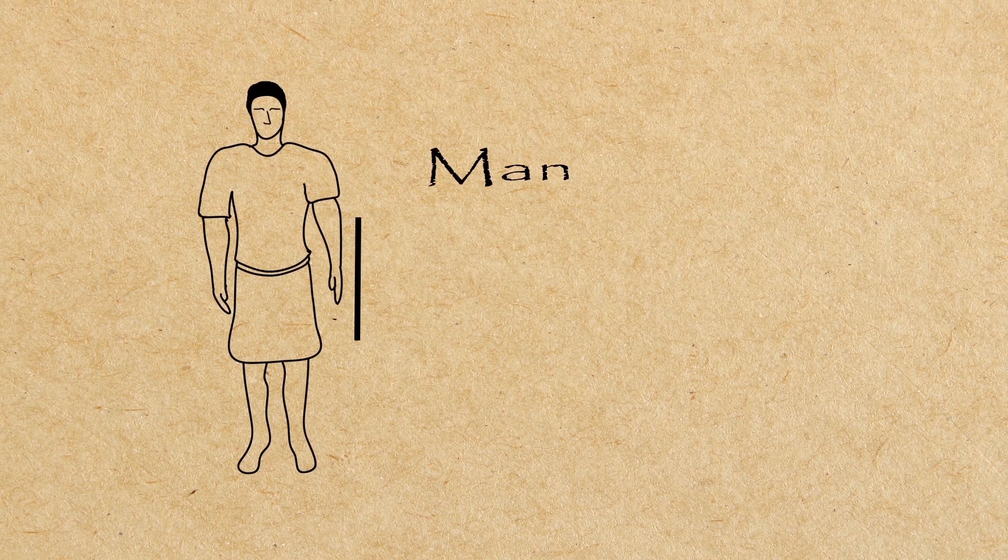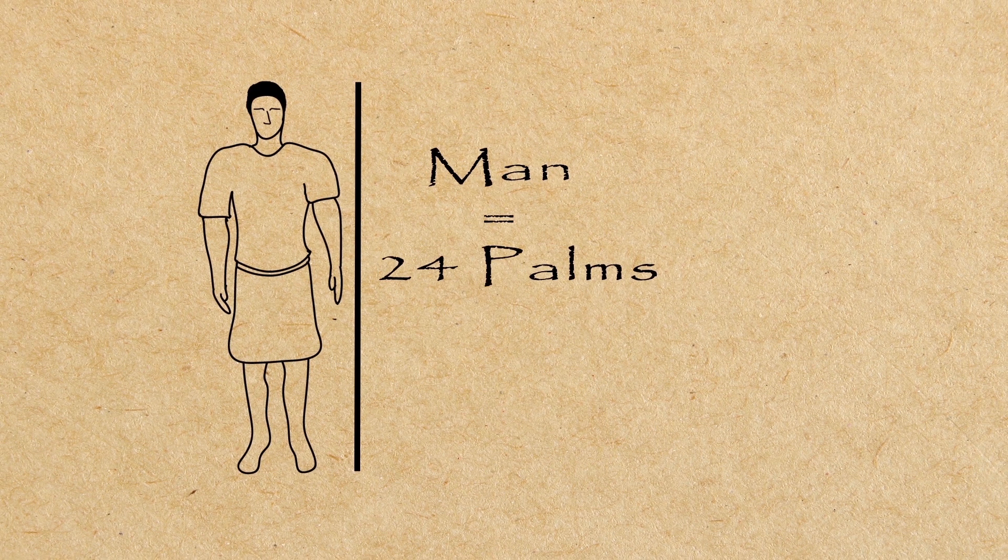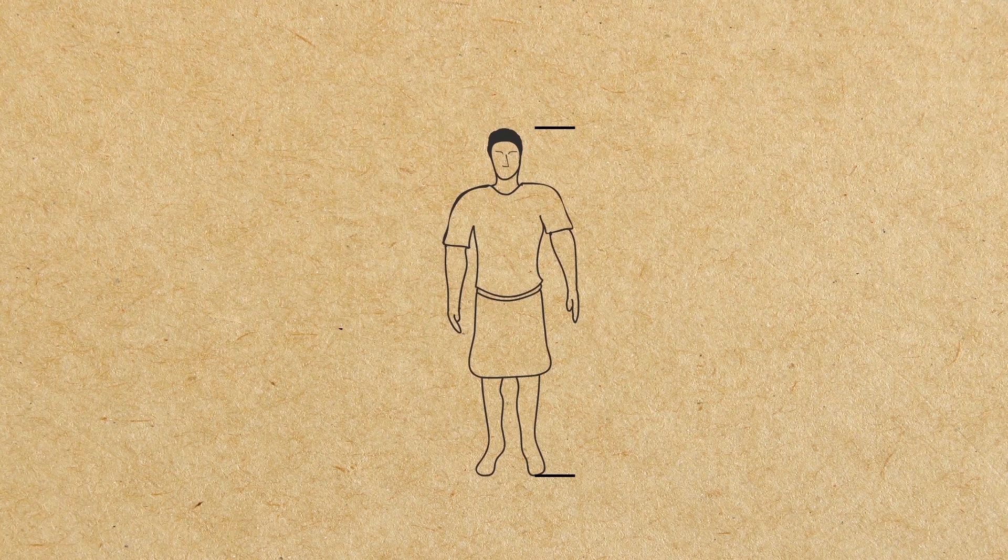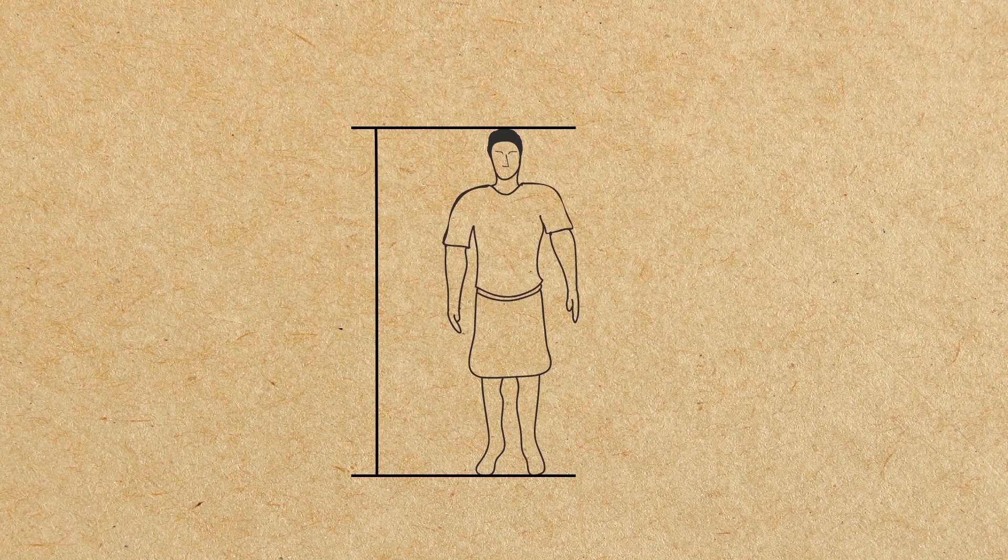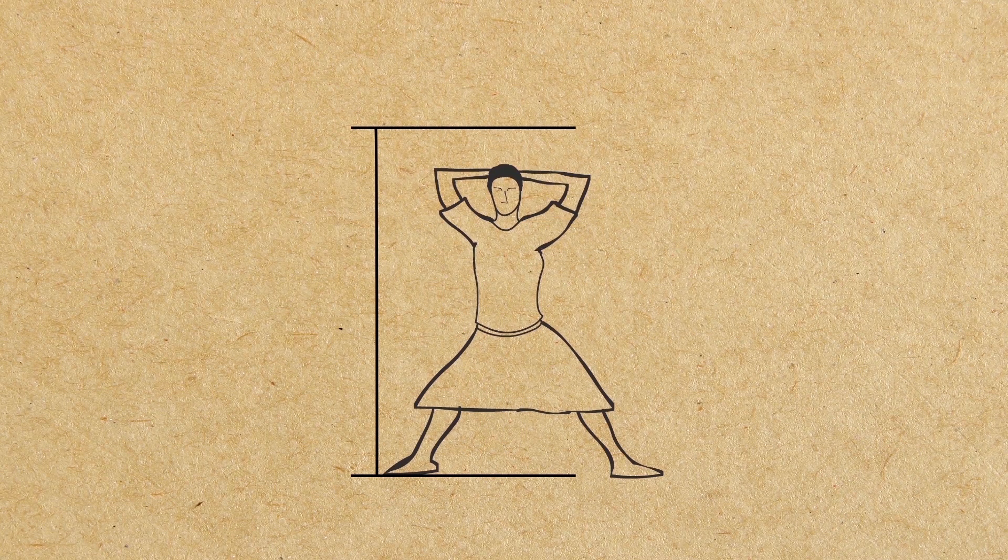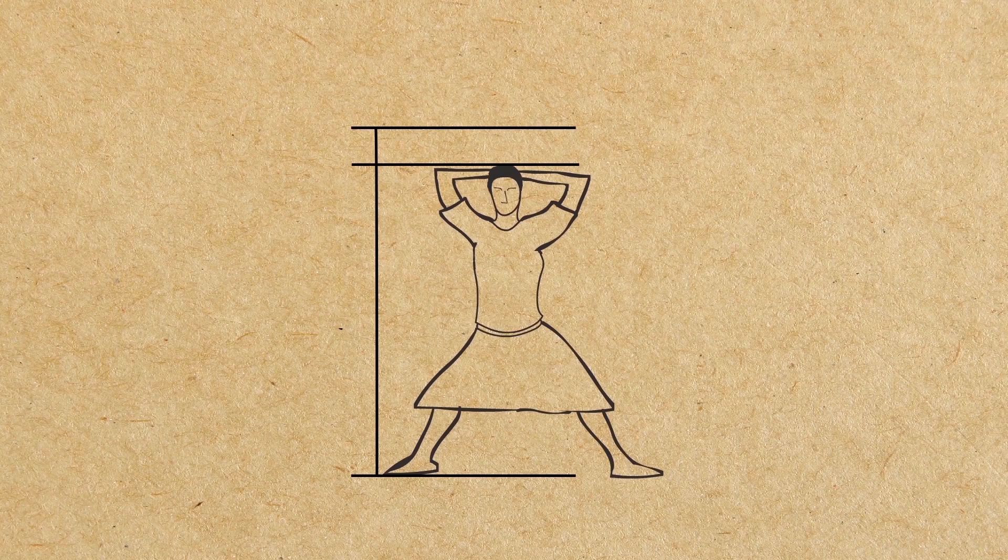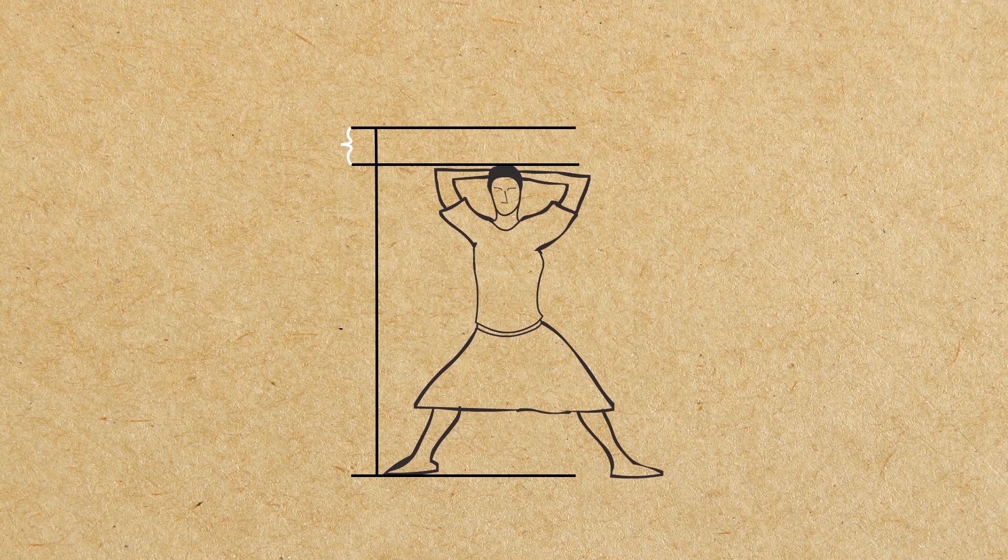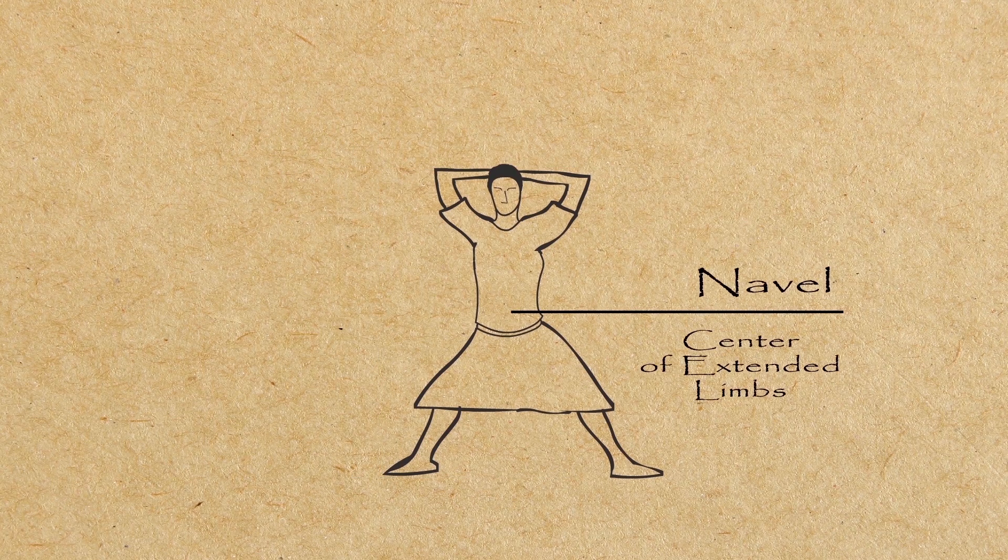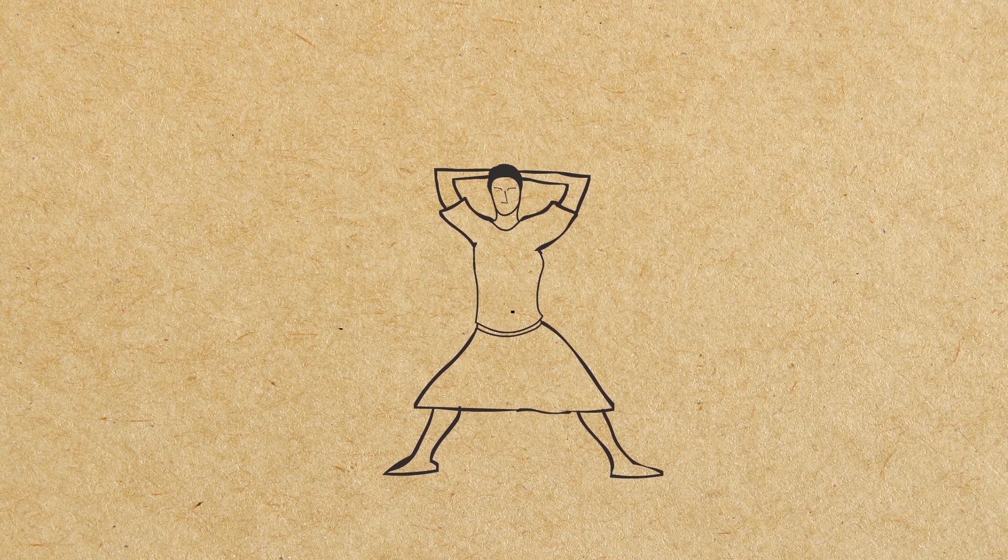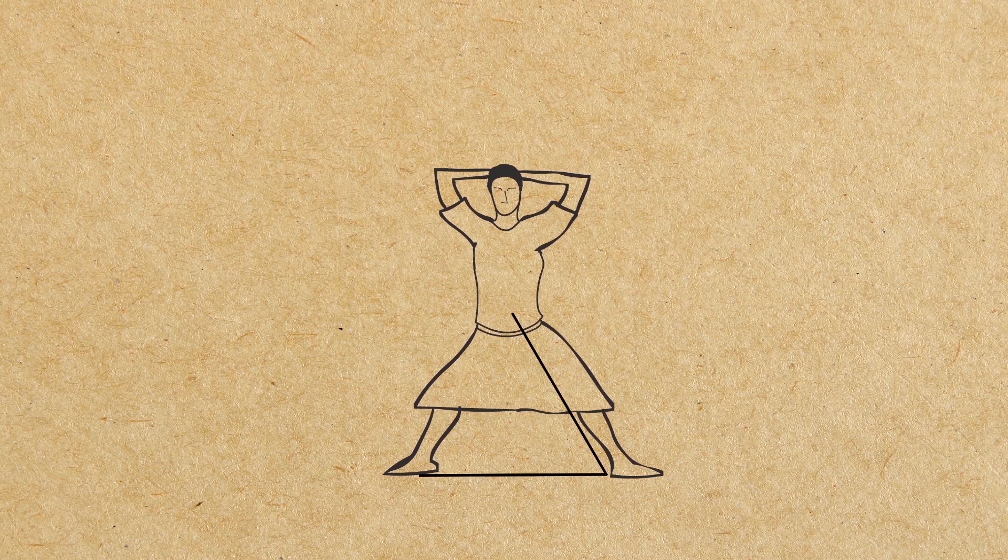If you open your legs enough that your head is lowered by one-fourteenth of your height, and raise your hands enough that your extended fingers touch the line of the top of your head, know that the center of the extended limbs will be the navel, and the space between the legs will be an equilateral triangle.